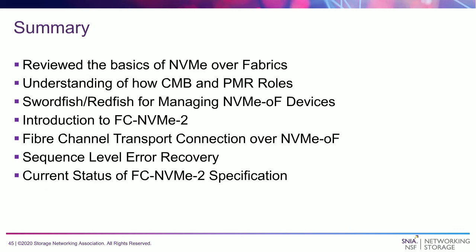The last question: how could we control the right order for error correction? The order for error correction is all based on the information returned from the target, given the target state and what the initiator state is. There is a message sent from the initiator to the target within the exchange that provides that information. Those are further details we're happy to provide if people are interested. We can also expand on that within the blog if that's an appropriate place to do so.